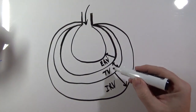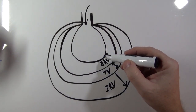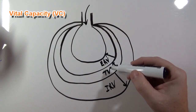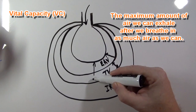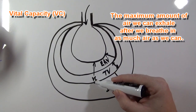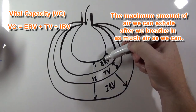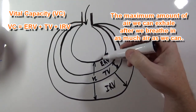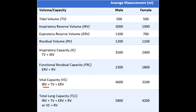So here we're breathing in as much air as we can and then exhaling as much air as we can. If we were to take all of these volumes and add them up, we would get vital capacity. This vital capacity is the air that we can breathe maximally in order to keep us alive — hence the term vital. The average vital capacity for a male is 4,600 milliliters, and for a female is 3,100 milliliters.